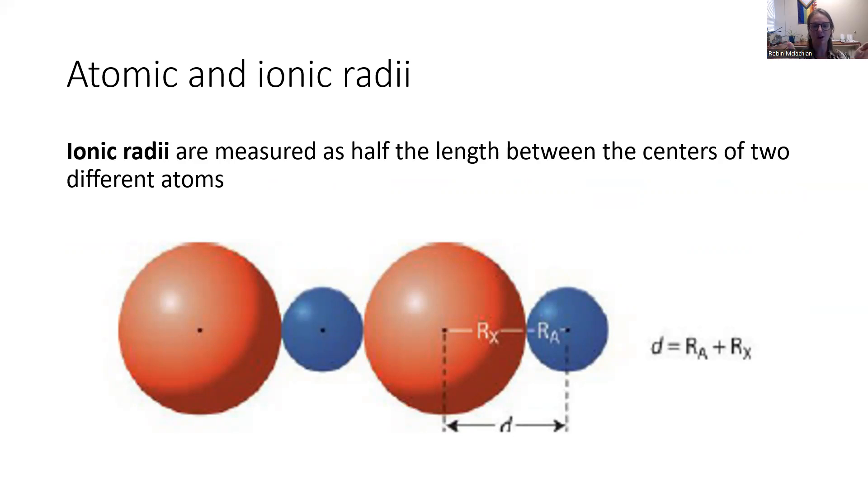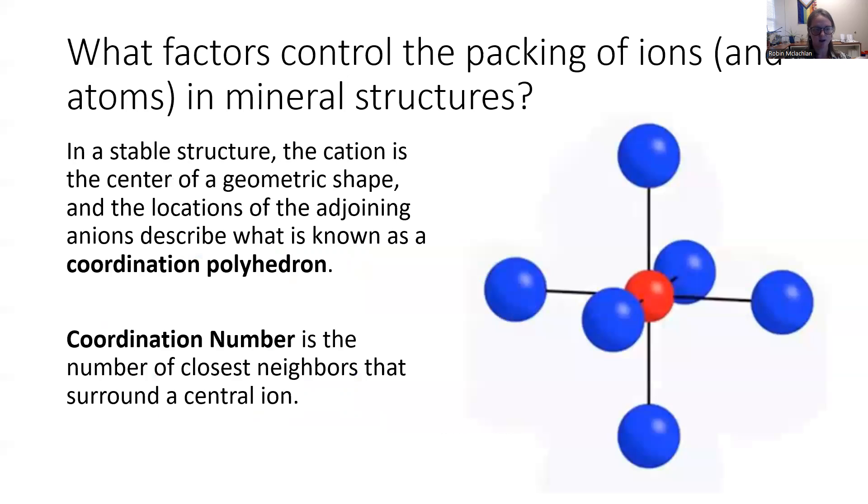Basically, you do the same thing. You take the distance between the center of the two and divide it by two. So it's a half length between the two centers of the different ions. So we have atomic radii, ionic radii, measuring the distance between those atoms that are bonded.